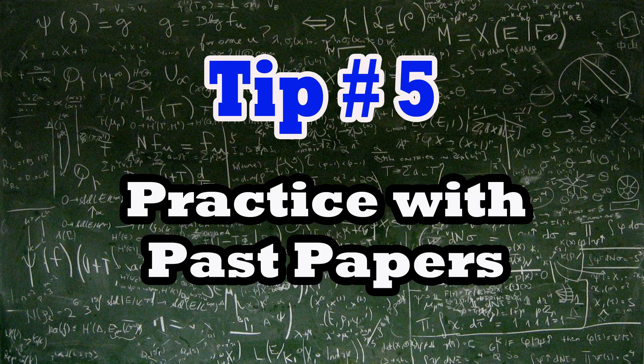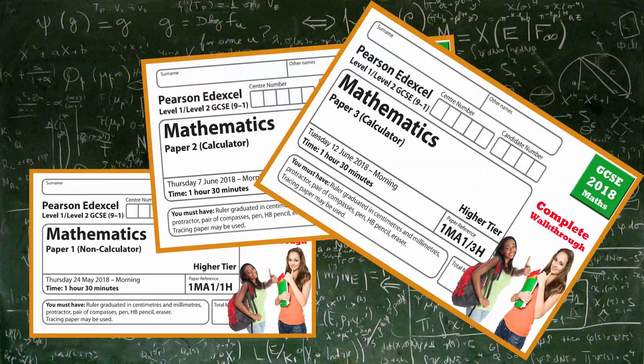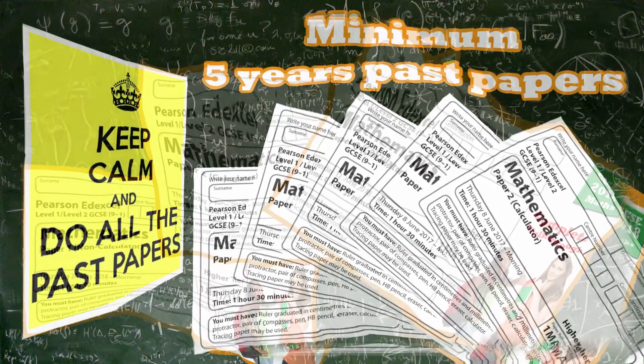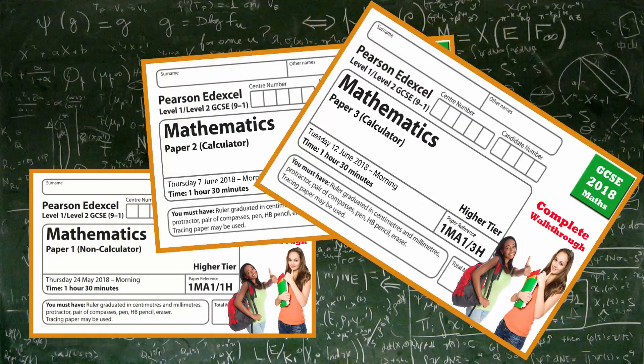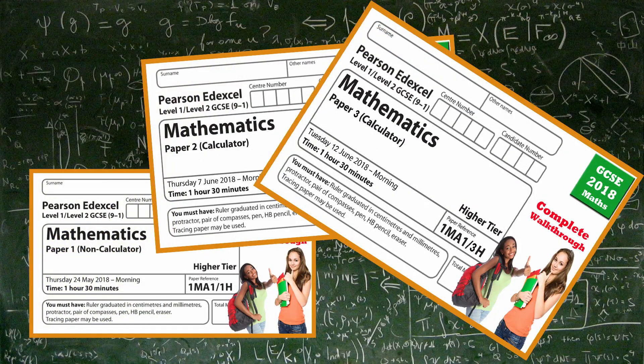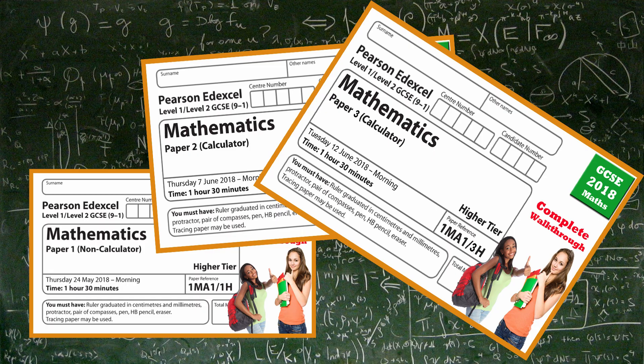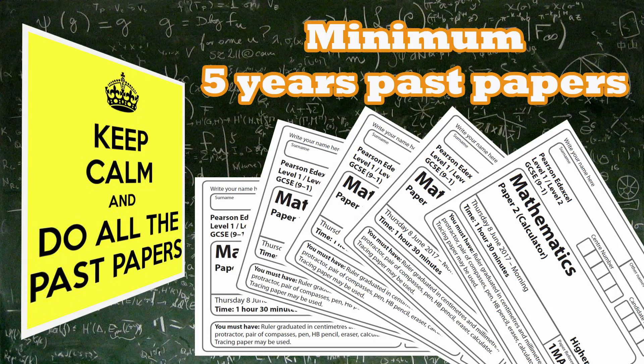Tip number 5: Practice with past papers. Once you have complete one section of a maths topic, you can practice the past paper style questions on that section. In this, you can check yourself whether the content you have revised is more than enough or not. If not, you can practice that specific section again. At least, practice the last 5 papers before your actual exam.